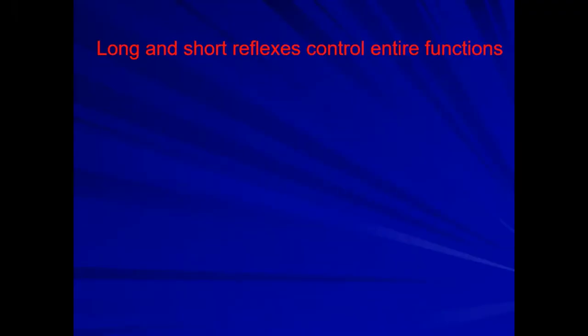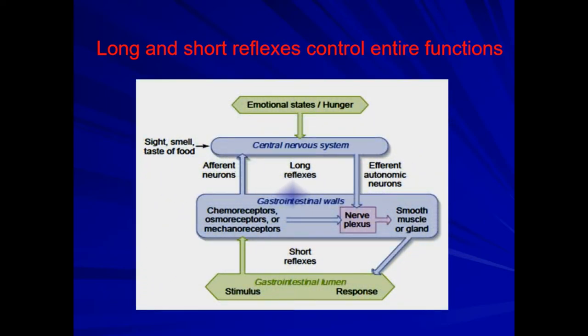Mostly two types of reflexes get involved for the entire functions of the GIT: one is called the long reflex and the other is called the short reflex. In this figure you can observe the words written 'short reflexes' and 'long reflexes'. The short reflexes develop when there is a loop developing between the gastrointestinal lumen and the plexuses present in the wall of the GIT.